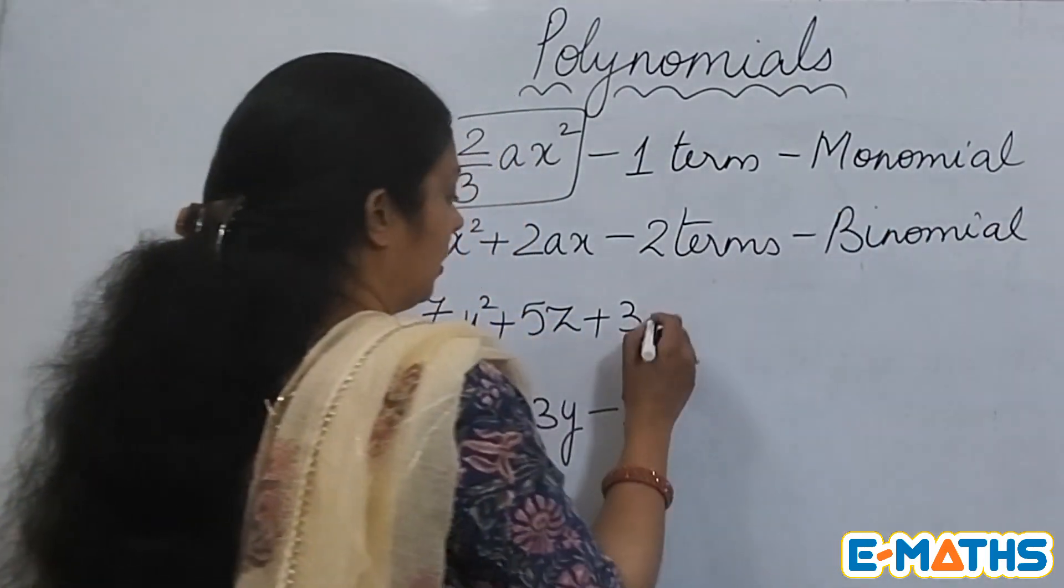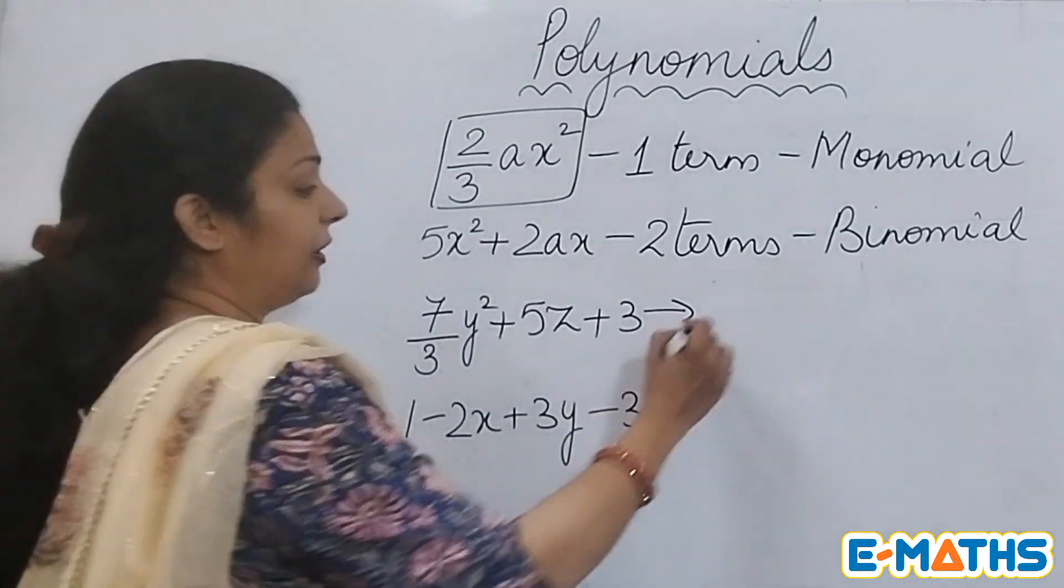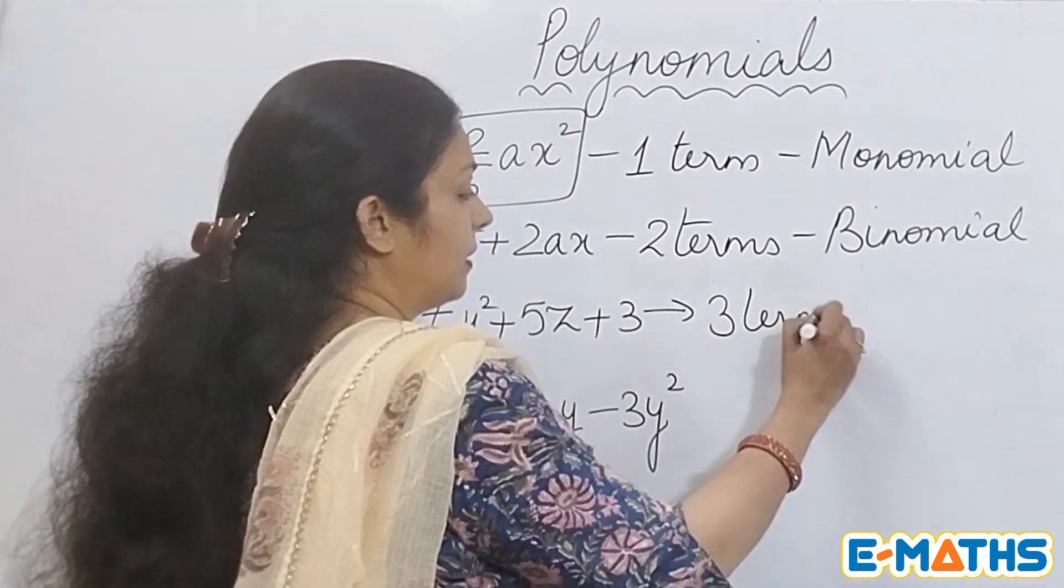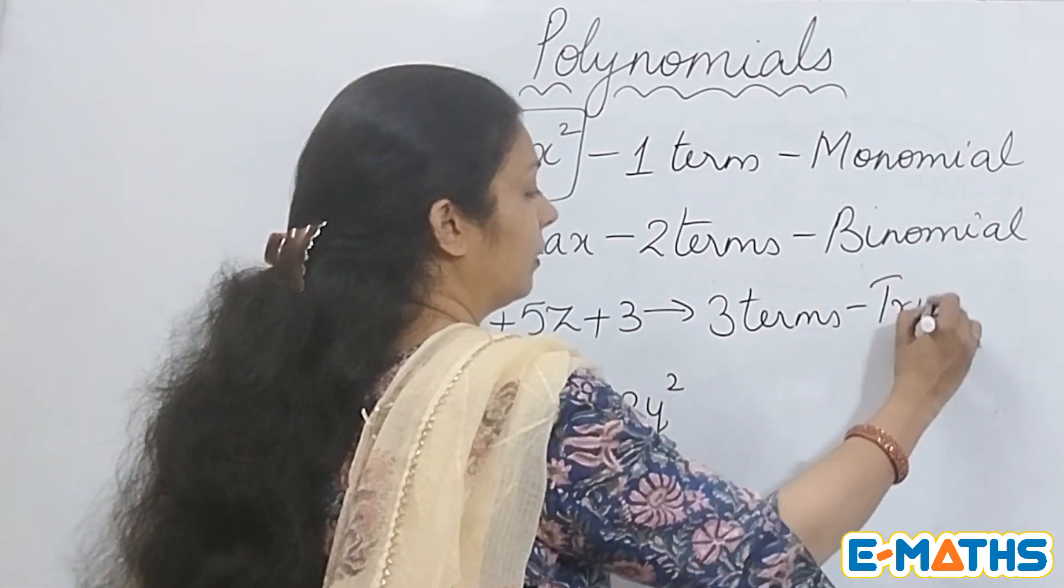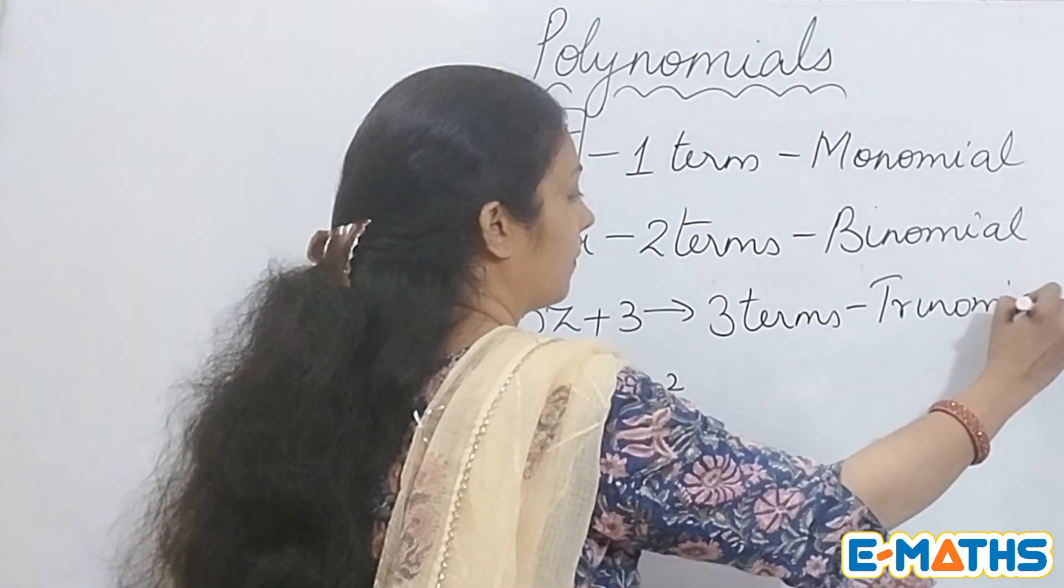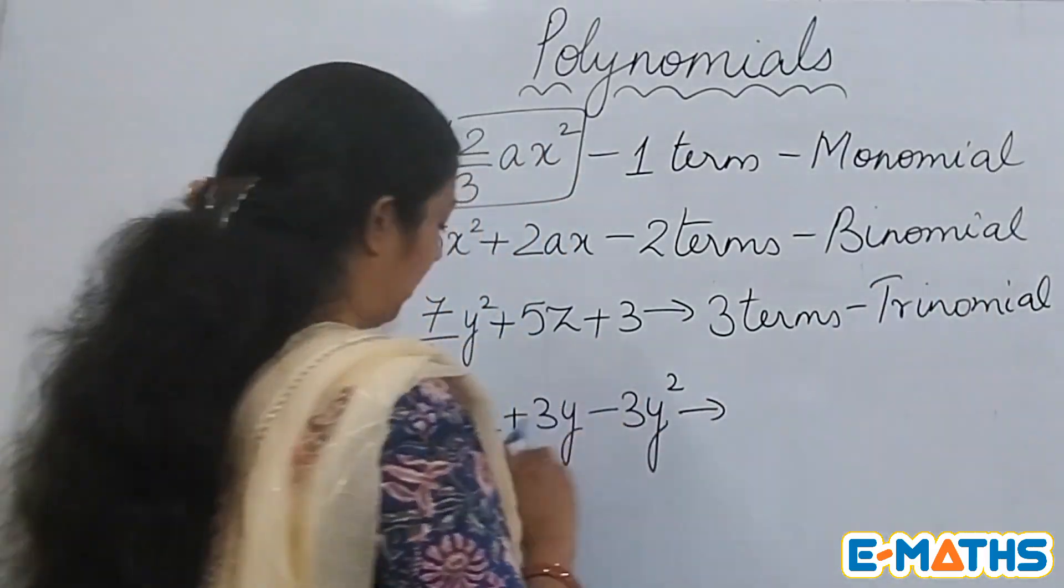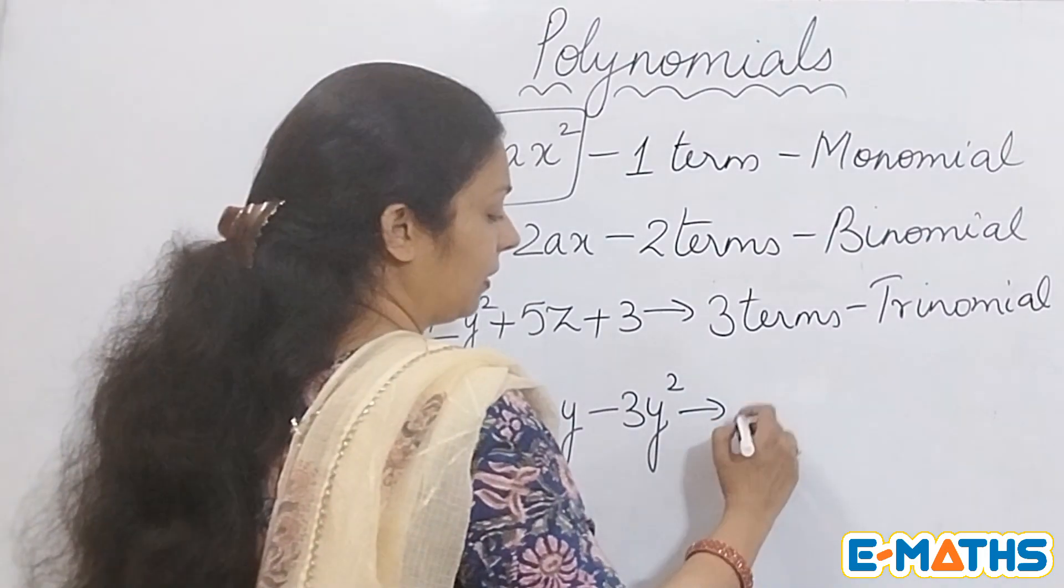If you look at this one, we have three terms, which makes it a trinomial. And here, if you see, it has more than three terms, so you can say it's a multinomial.